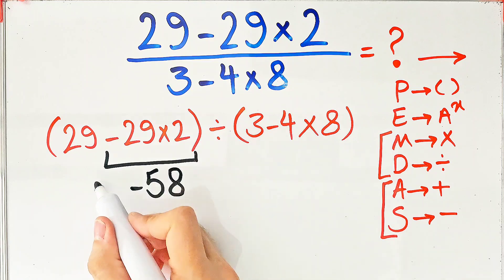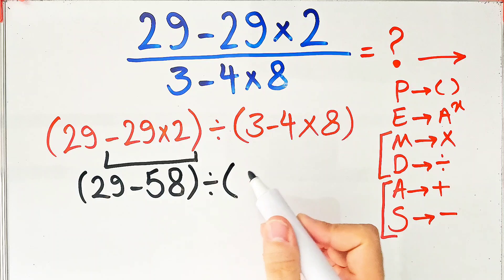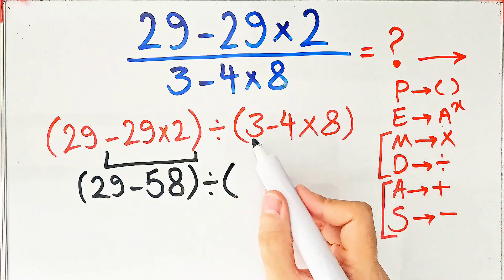Now we have 29 minus 58 in the first parentheses, then divided by 3 minus 4 times 8. Again, we simplify this multiplication.